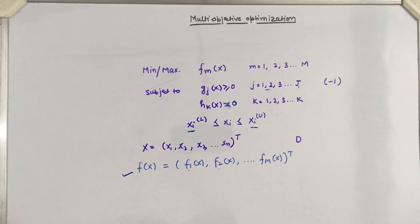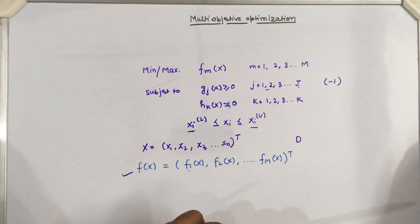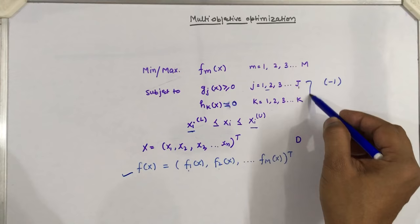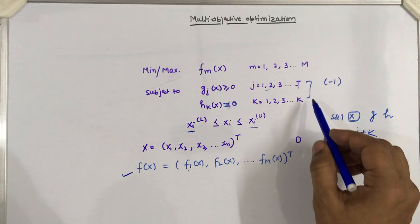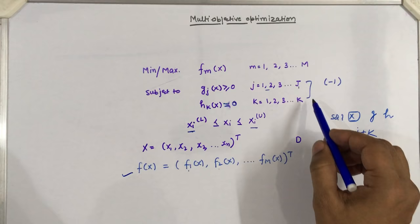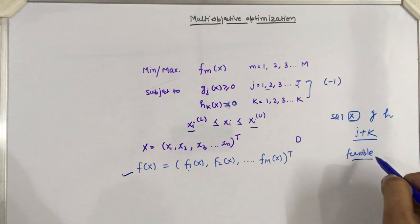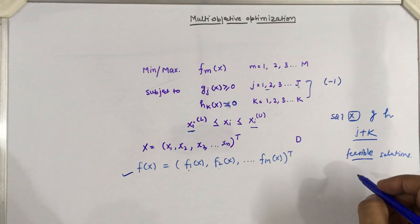This is the overall problem formulation for multi-objective optimization. If a solution x satisfies all J + K constraint functions — the J inequality and K equality constraints — then x is called a feasible solution. Feasible solutions are those that satisfy all constraint functions. If any solution does not satisfy the constraint functions, it is called an infeasible solution.